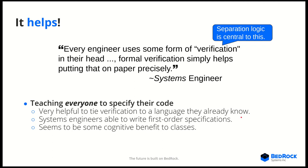We have several systems engineers who are able to write specifications around interesting classes — first-order specifications of data structures that are very common in the systems code we're working on. Concurrent invariants and things like that are within the purview of several of the systems engineers we have, and that experience is growing out into the wider group of our systems engineers.